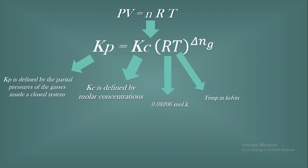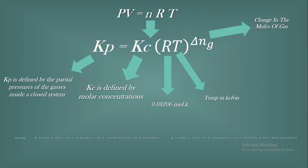Delta (Δ) means change, N means moles, and G means gas. So ΔnG means the change in the moles of gas. The formula for ΔnG is: total moles of gaseous products minus total moles of gaseous reactants — that is, final minus initial.